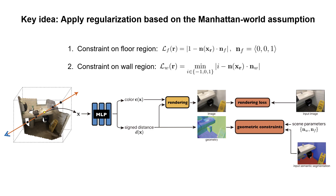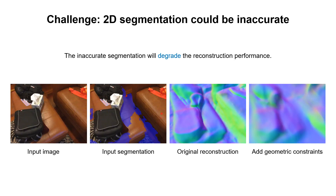Specifically, we enforce the normal directions of floor regions to be straight up. Then we introduce a learnable normal, and enforce normal directions of all wall regions to be either parallel or orthogonal with the learnable normal. Applying geometric constraints can improve the reconstruction quality in most cases. However, 2D semantic segmentation results predicted by the network could be wrong in some regions, which leads to inaccurate reconstruction.